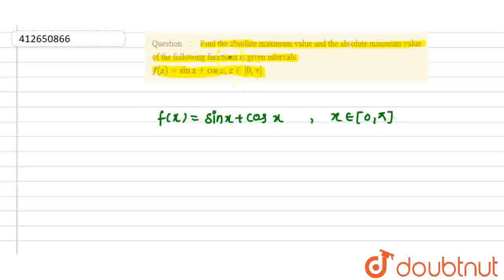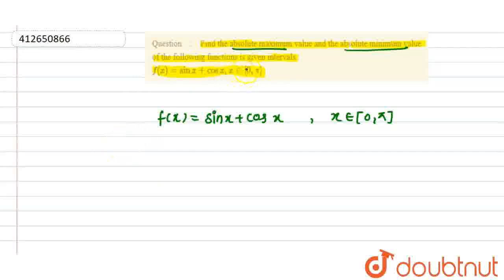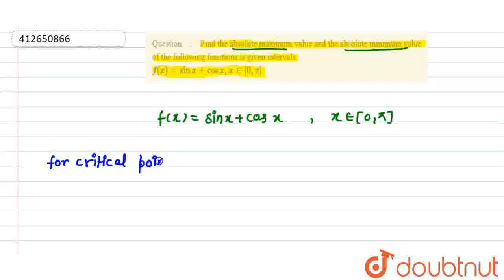और हमें absolute maximum और absolute minimum value find करनी है इस function की। तो absolute maximum या absolute minimum value find करने के लिए हमें critical points भी चाहिए होंगे — interval के बीच में ऐसे points जिन पे f'(x) की value 0 हो। तो for critical points, f'(x) को 0 के equal put करते हैं।